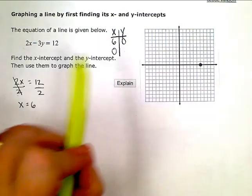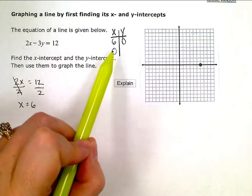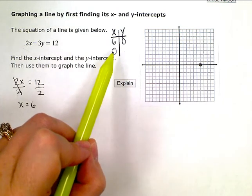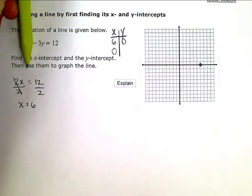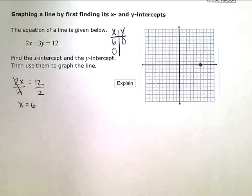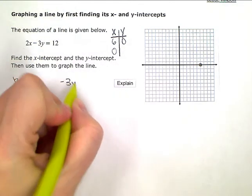Now let's get the y-intercept. We're going to zero out or ignore the opposite variable—the x-term. I'm left with -3y = 12.